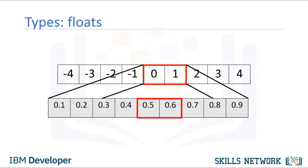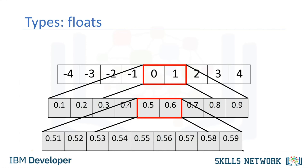Similarly, consider the numbers between 0.5 and 0.6. We can select numbers in between them — these are floats as well. We can continue the process, zooming in for different numbers. Of course, there is a limit, but it is quite small.